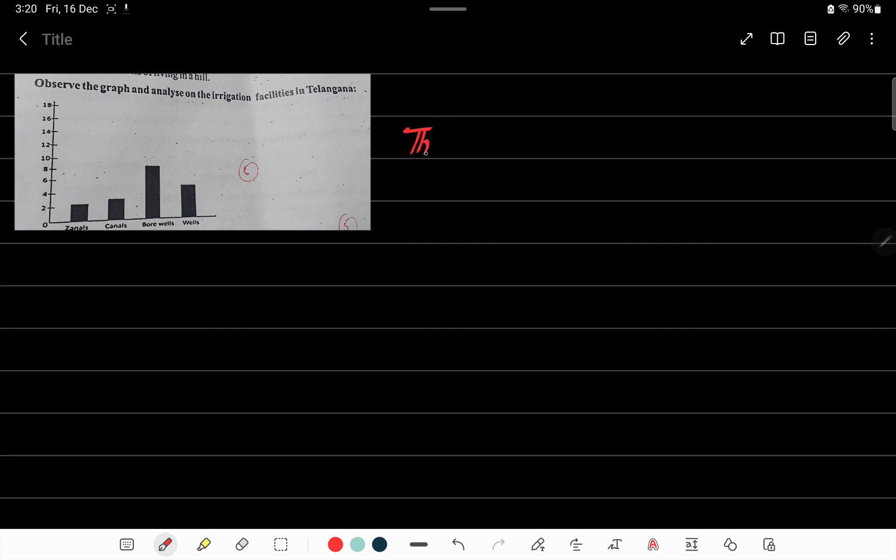First, write: the given graph shows the irrigation facilities in Telangana.